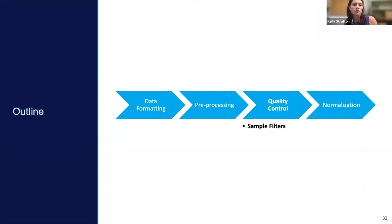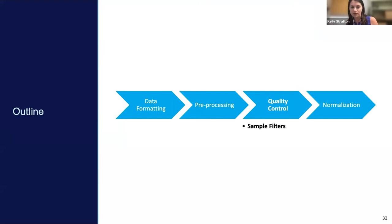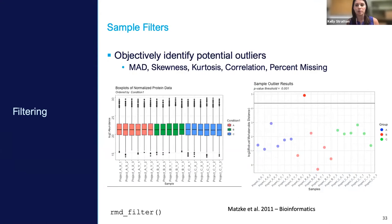Now that we've covered biomolecule filters, we turn to sample filters — why we might want to filter out samples and how to do that as objectively as possible, with the acknowledgment that some subjective choices still need to be made. The basic idea is that some samples in our dataset might be outliers due to something in sample handling, processing, or instrument runs, where the data for that sample is not representative of the group it belongs to.